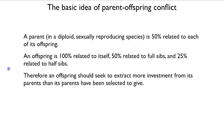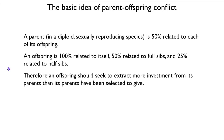Therefore, an offspring should try to extract more investment from its parents than its parents have been selected to give. The mother has been selected to give equal investment to all her offspring, as she is 50% related to all of them. However, the offspring, being 100% related to itself but only 50% related to full sibs and 25% to half-sibs, would like to extract more for itself — up to the point where it's damaging the mother's investment in siblings just enough so that it gains equal fitness through itself as through them. It wants siblings to get something, but it wants more for itself.